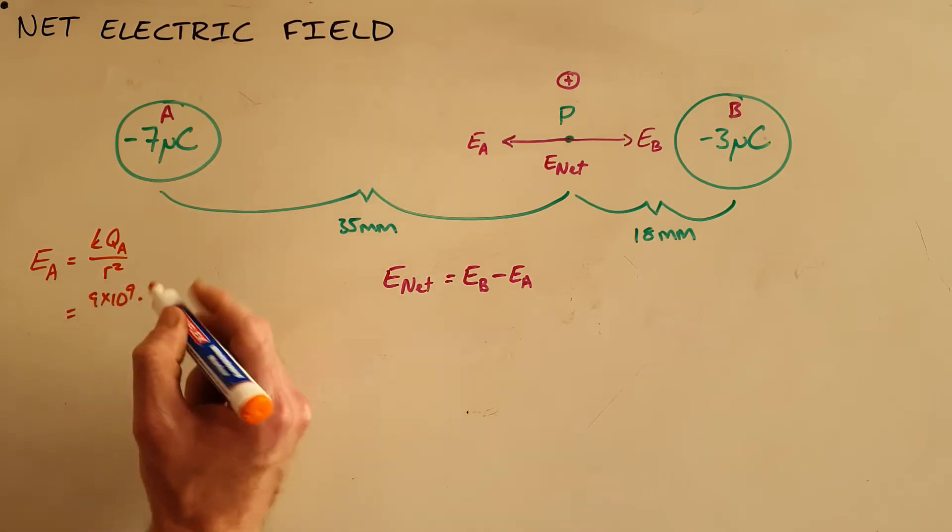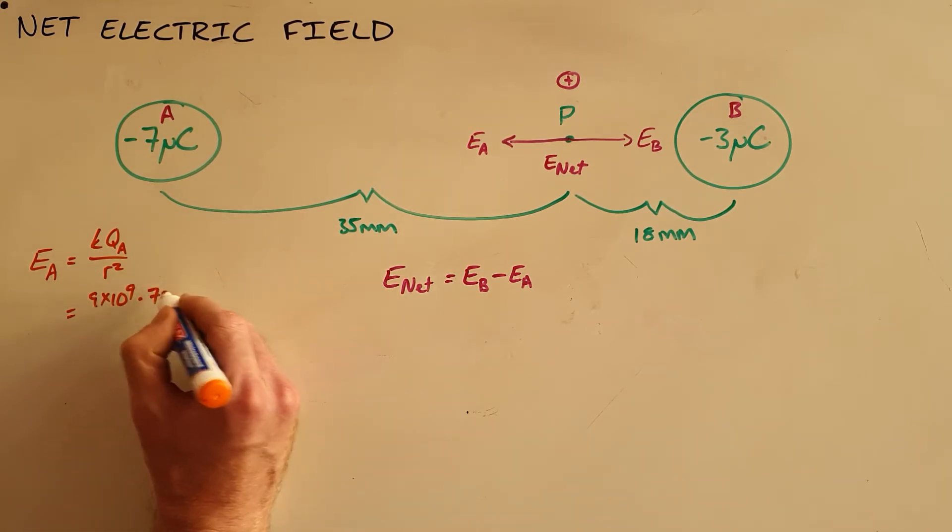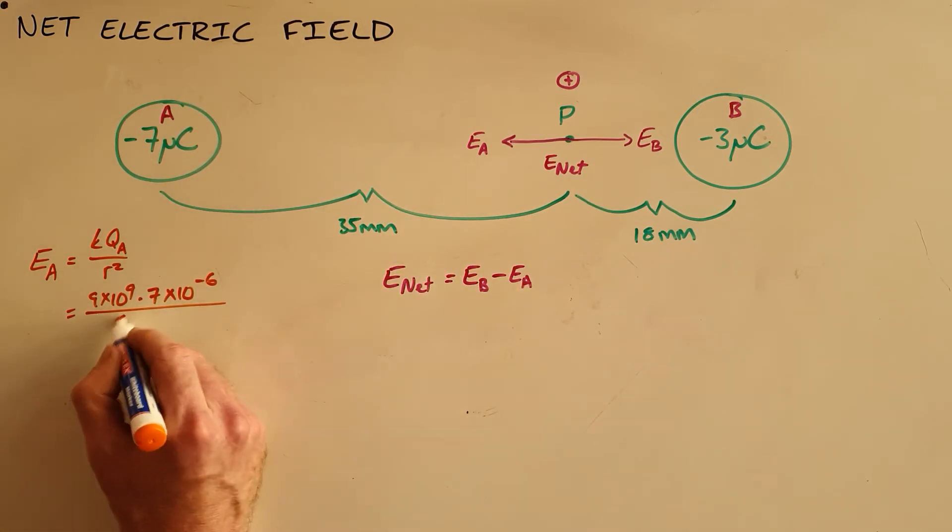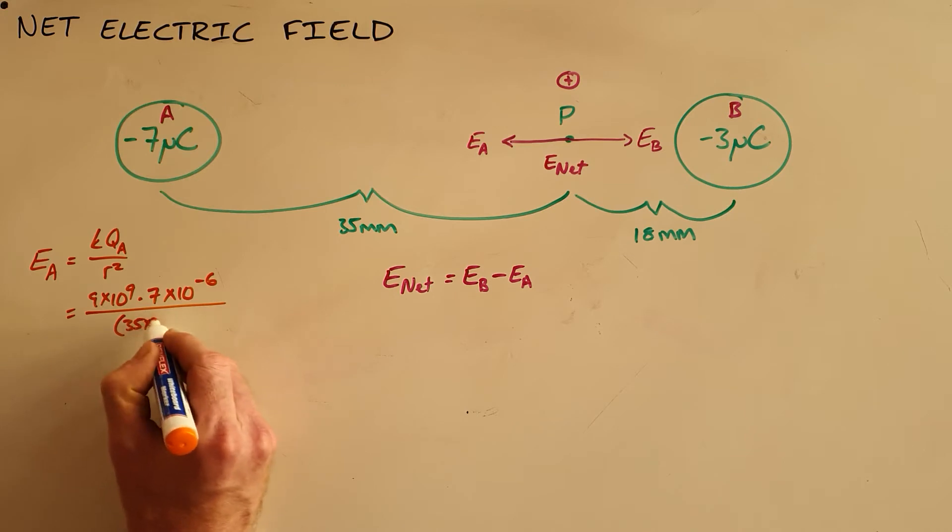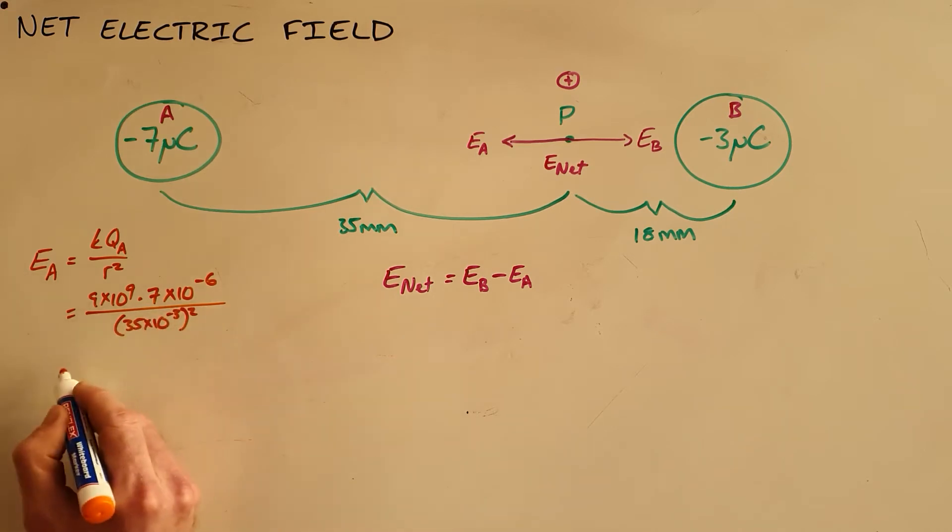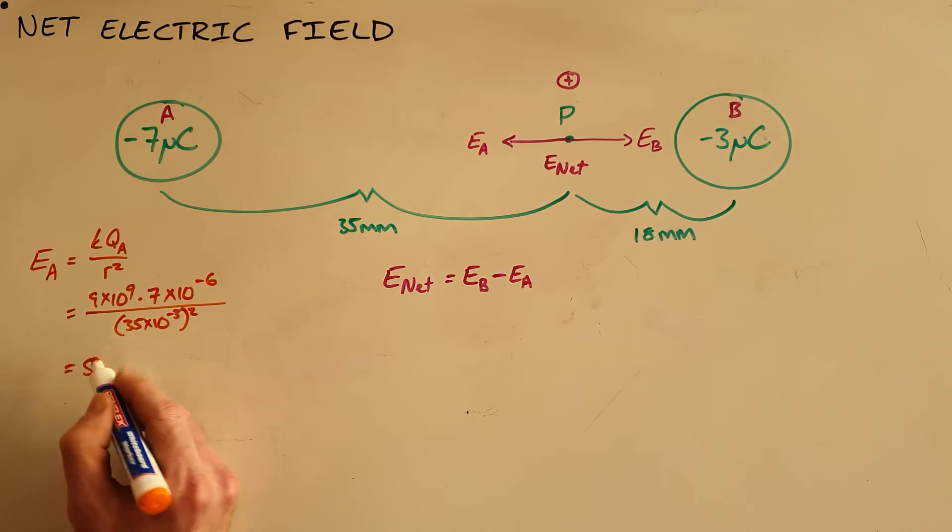That is our constant 9 times 10^9 multiplied by 7 microcoulombs, which we know is 10^-6, over the distance between them squared, that is 35 millimeters, 35 times 10^-3 squared, which gives us an electric field as a result of A of 5.14 times 10^7 measured in newtons per coulomb.